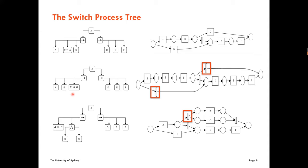There are two special cases. First, if the source activity is at the end of an exclusive choice branch, or the destination is at the start of an exclusive choice branch, we need extra invisible tasks. For example, to model a switch from activity C to activity D where C ends one exclusive choice branch and D begins another, we add two more invisible tasks. Second, when the source of a switch is just before an AND split, or the destination is an AND join, we also need extra invisible tasks to serve as start or end points for the parallel branches to preserve soundness.